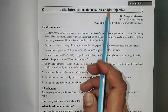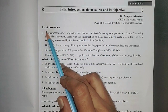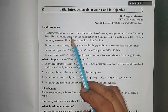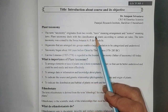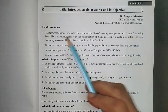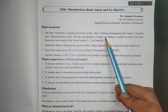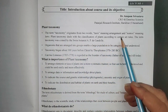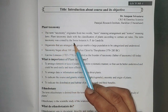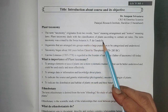Introduction about the course and its objective. What is plant taxonomy? The term taxonomy originates from two words: taxis meaning arrangement and nomos meaning law or lodge. Plant taxonomy deals with the classification of plants according to certain sets of rules. The term taxonomy was coined by the Swiss botanist A.P. de Candolle.